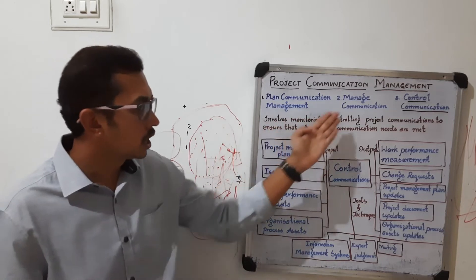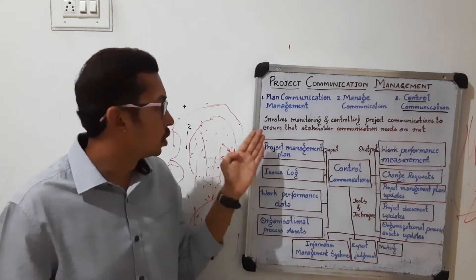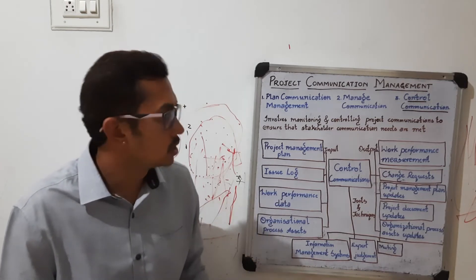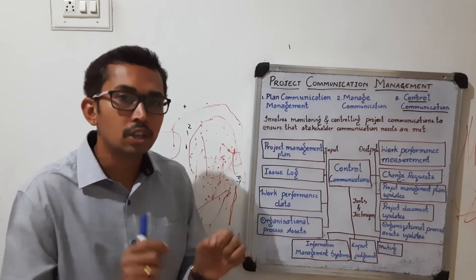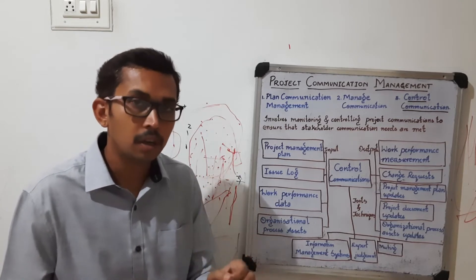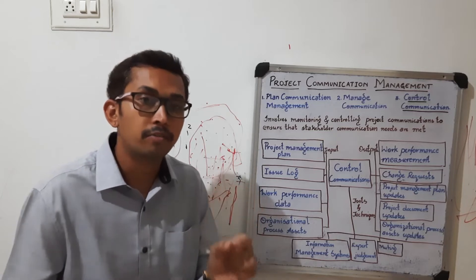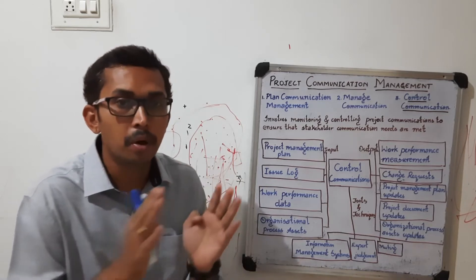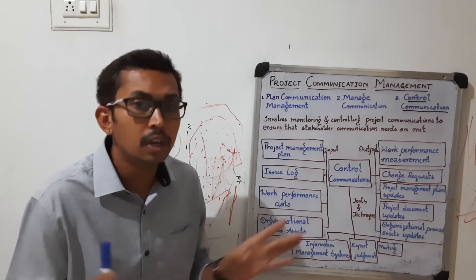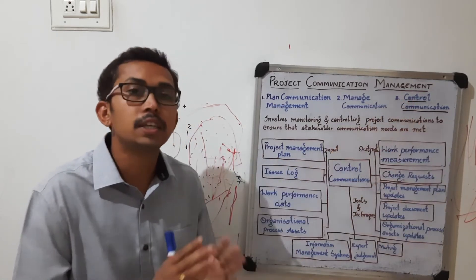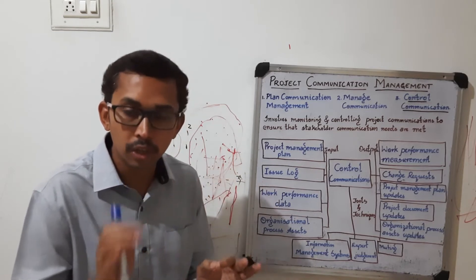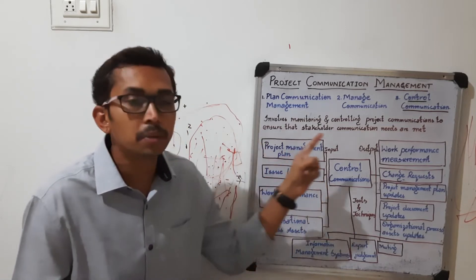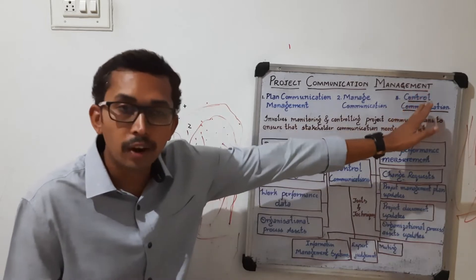Control communication involves monitoring and controlling project communications to ensure that stakeholder communication needs are met. It is all about measuring performance and project progression — whether it is according to the project management plan or not. That is what we call control communication.